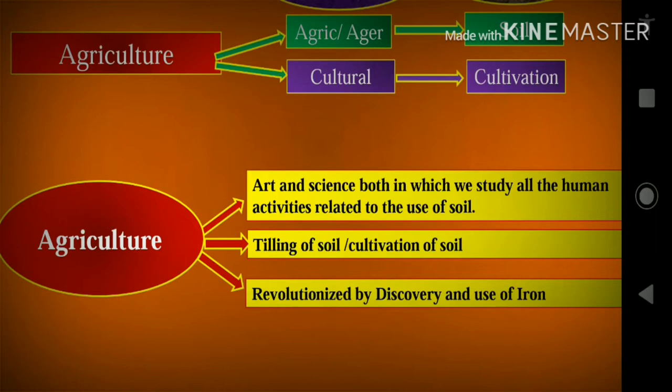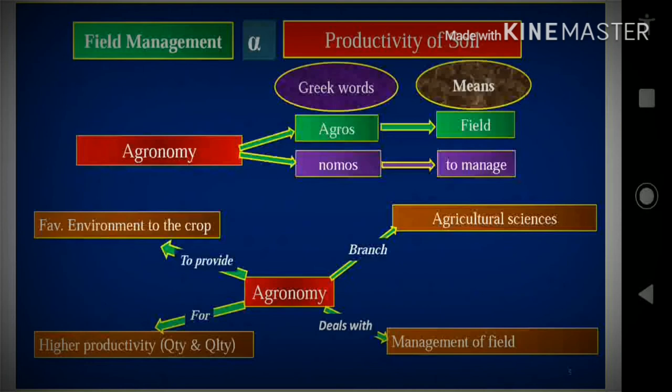In agriculture, a revolution occurred by the discovery and use of iron. The revolution occurred in agriculture by the discovery of iron. Field management is directly proportional to productivity of soil — that means, if field is managed properly then productivity of soil will increase. So here we will know the concept of agronomy, which developed as field management.